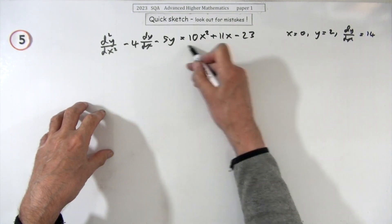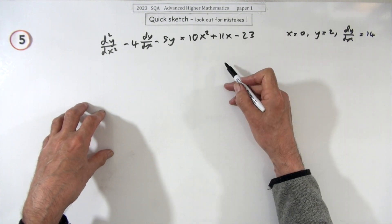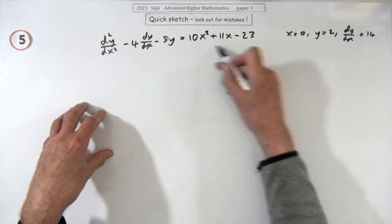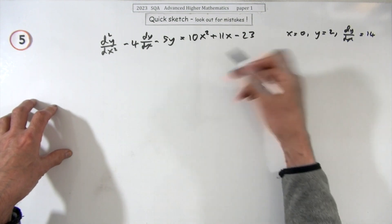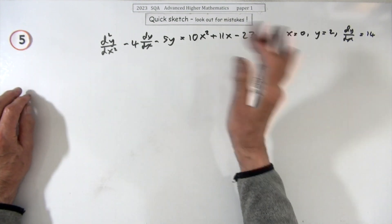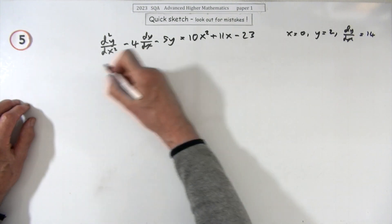Right, well it's got this polynomial over here for the particular integral. Might look quite big and long but there's no problem with polynomials, they're just all mouth. At the first sign of trouble they just disappear fairly quickly. Well, first of all, auxiliary equation.